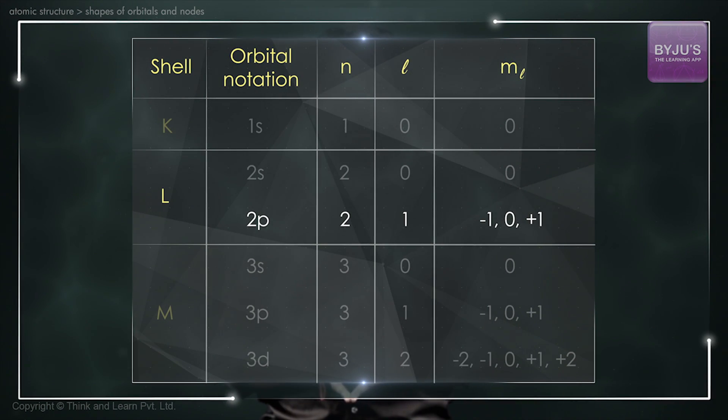Let us bring back the table. The three possible values of ml imply that there are three possible orientations, and thus three different orbitals in the 2p subshell within the second shell.